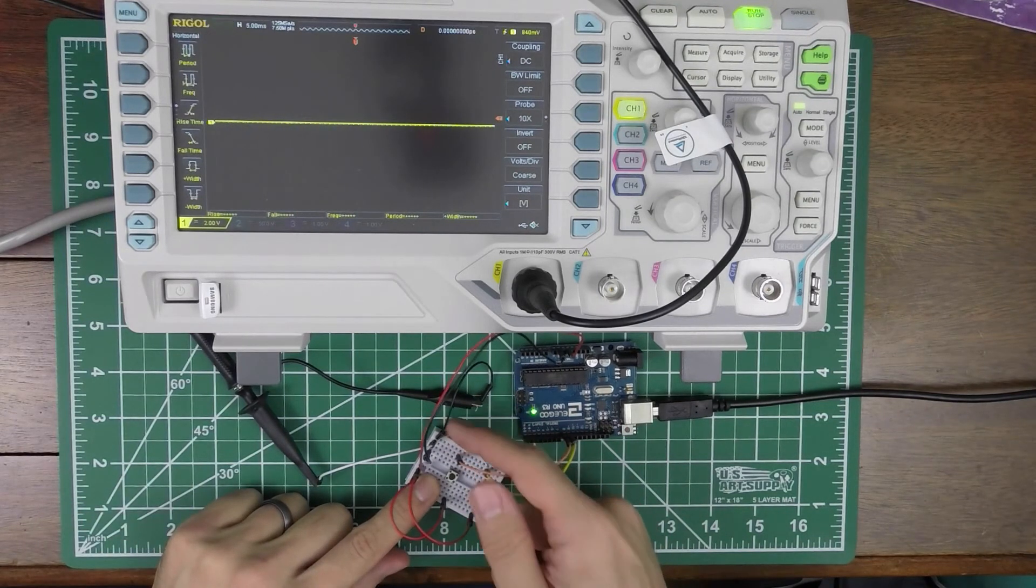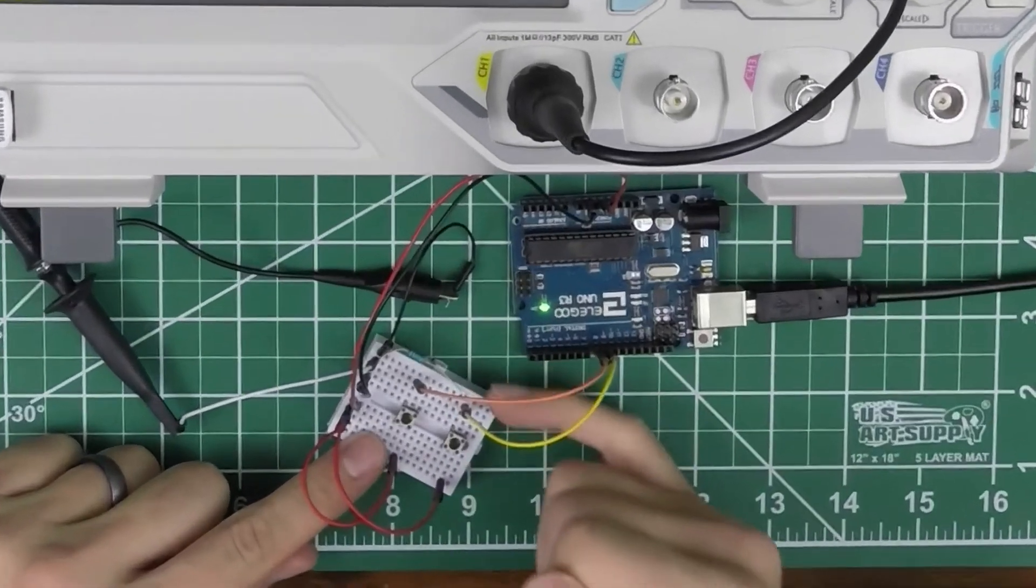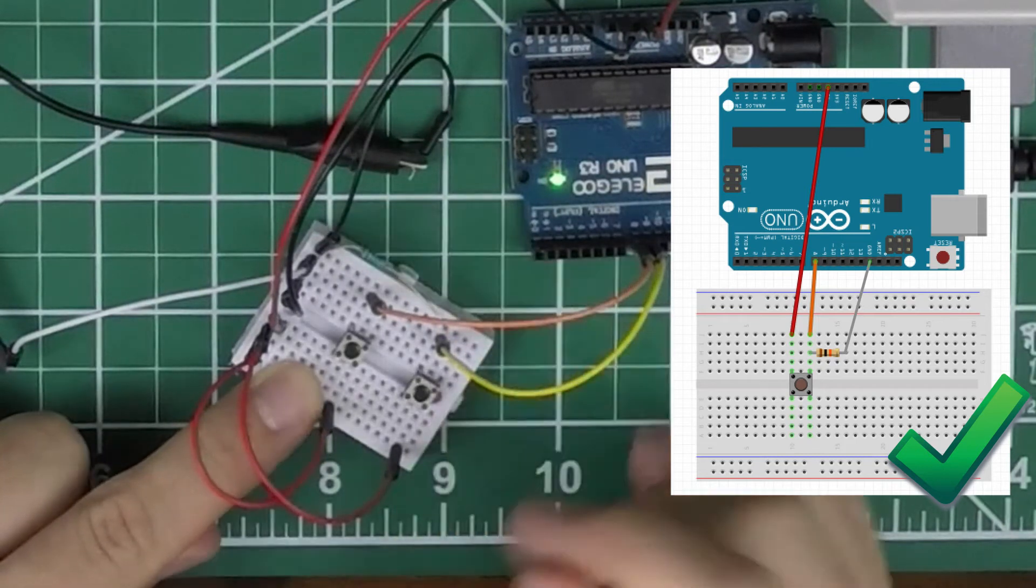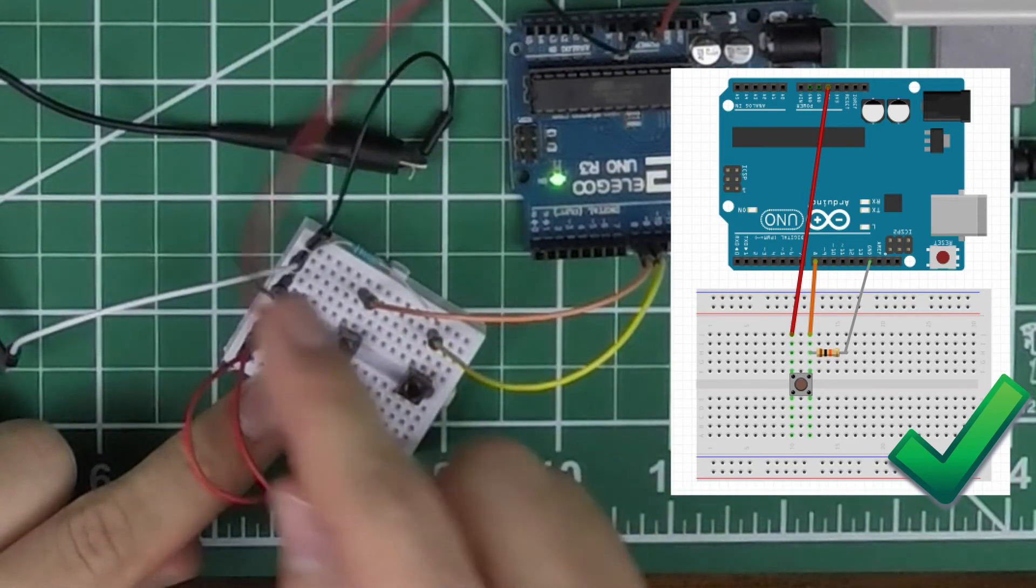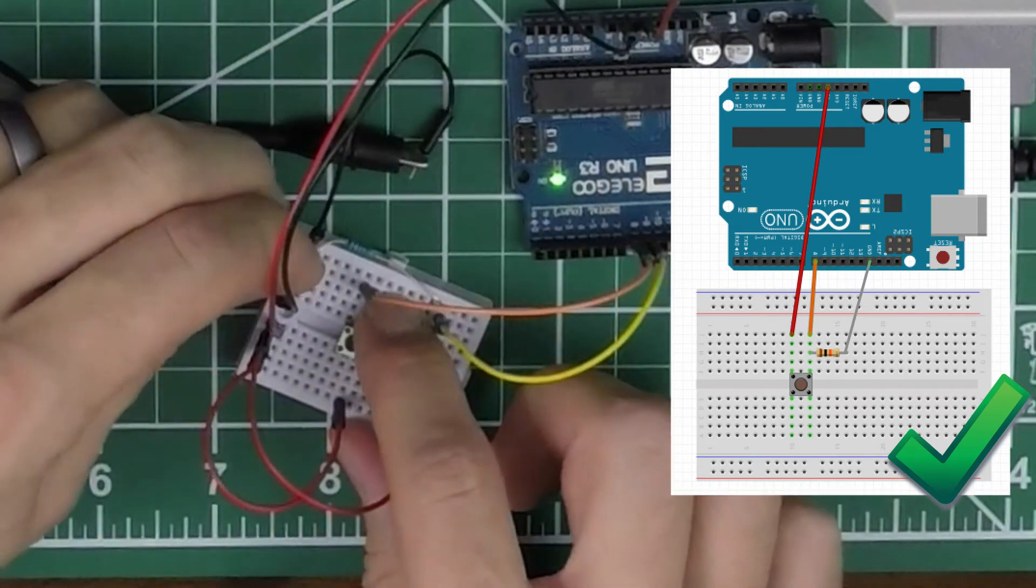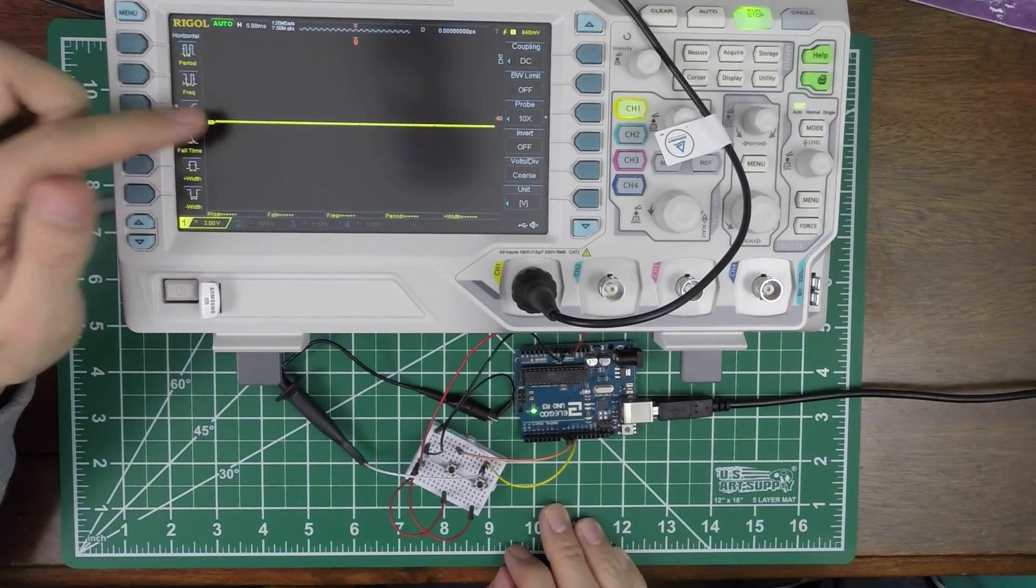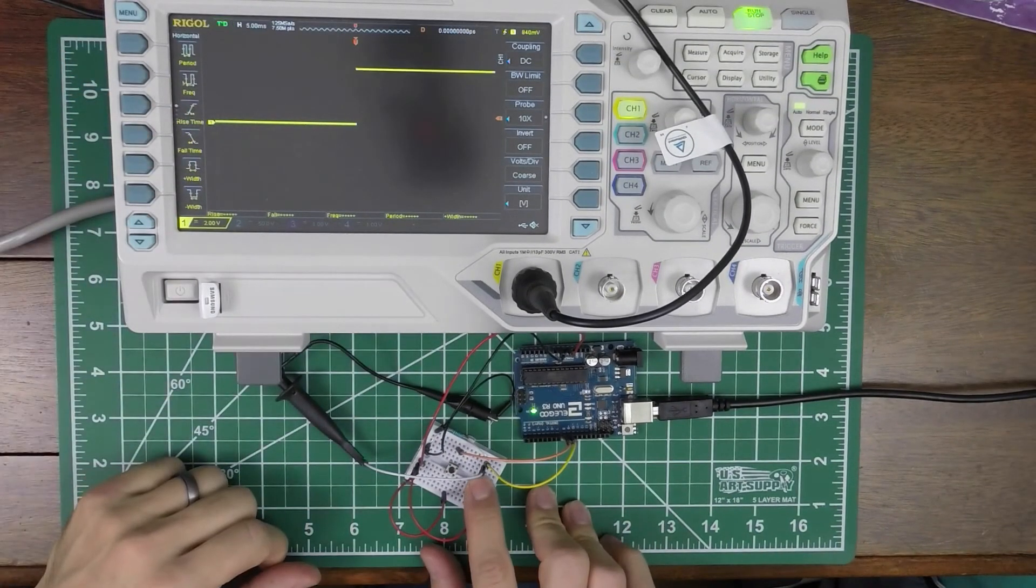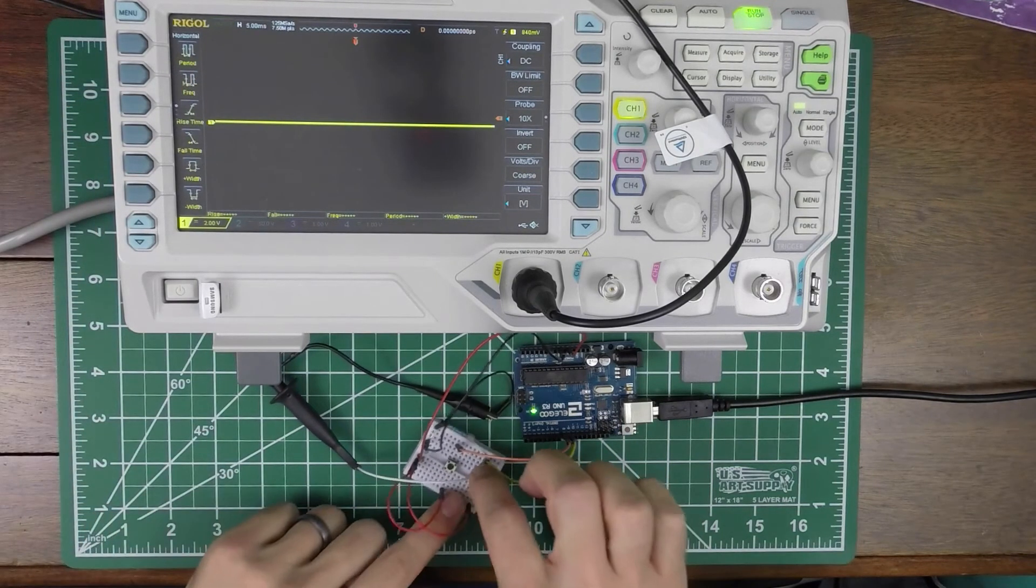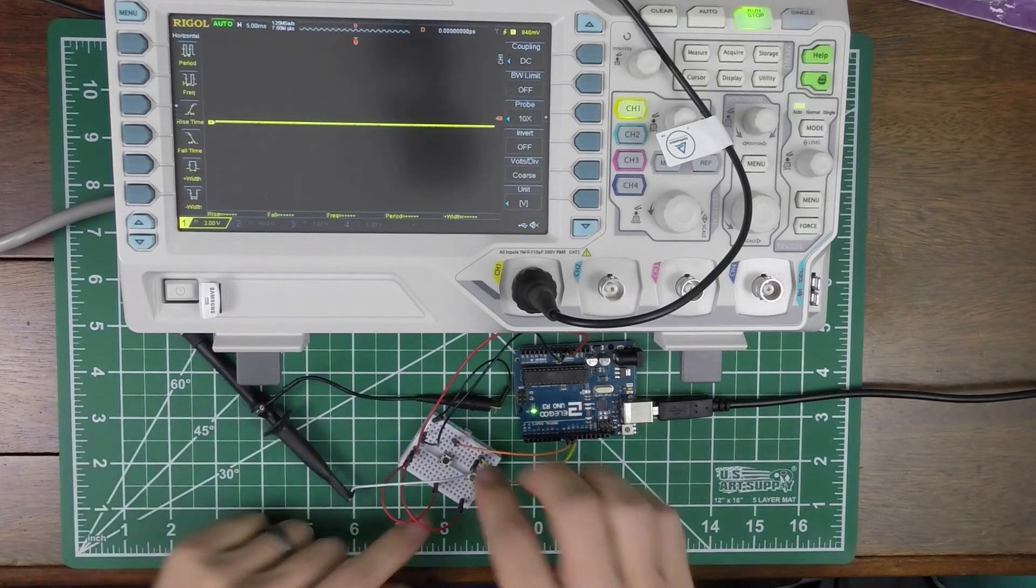So what you do is you add what's called a pull-down or a pull-up resistor. Now in this case, I have a pull-down, that just means my resistor goes from where my pin would normally connect to ground. So it's essentially creating a connection for my pin to access to ground, and therefore it's going to give me a clean signal. So if I plug this in here, now you can see my signal's very clean. And when I push this button, I get a nice high signal, a nice low signal, it doesn't matter how much I touch this.